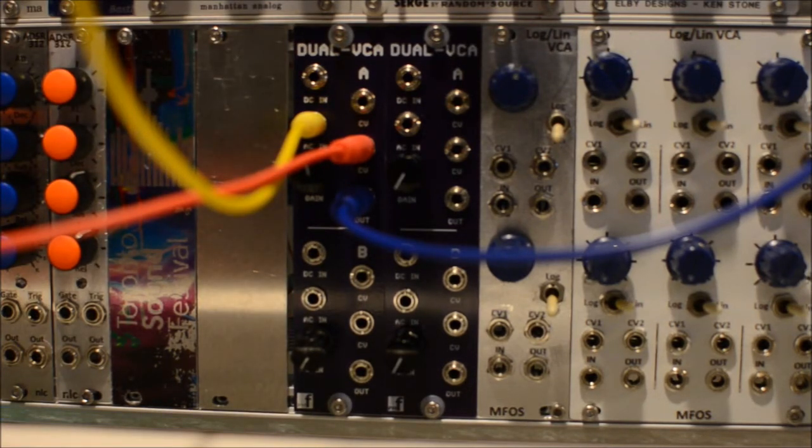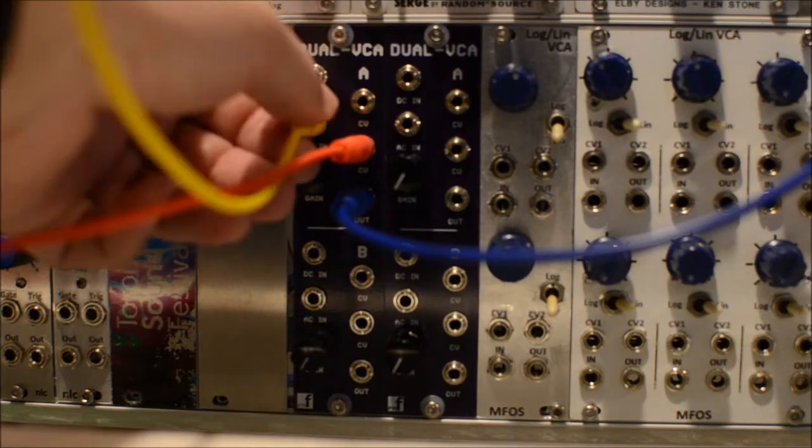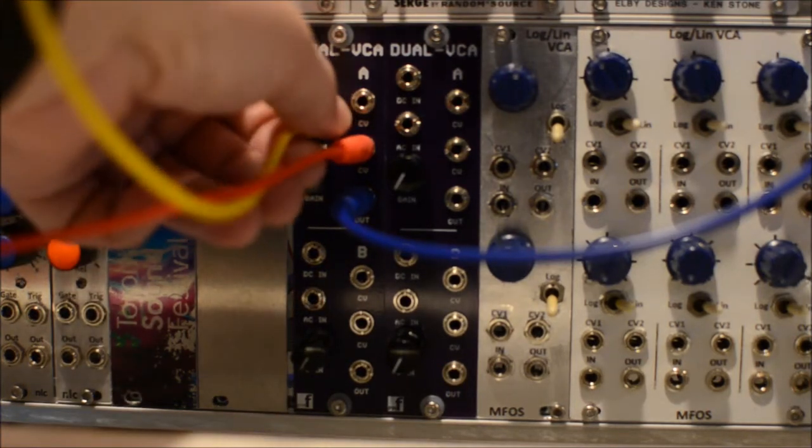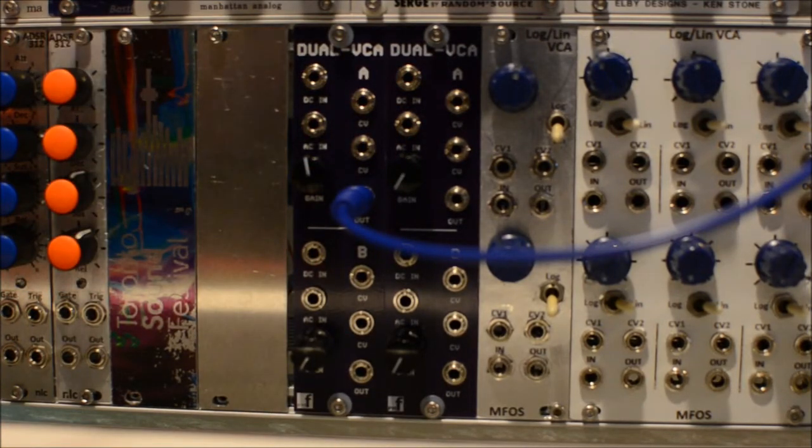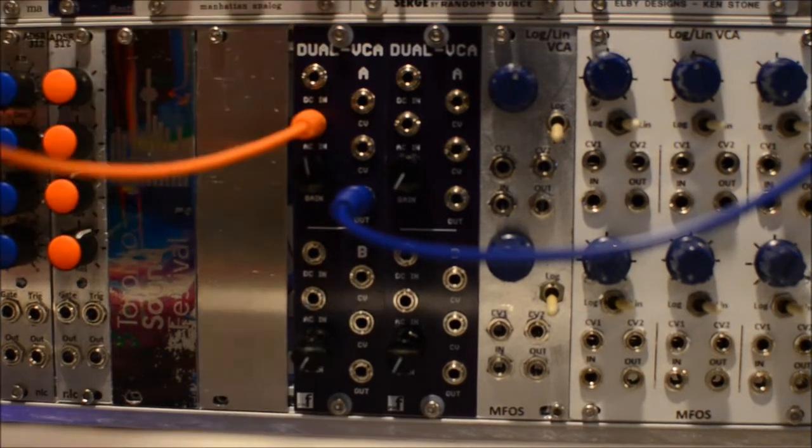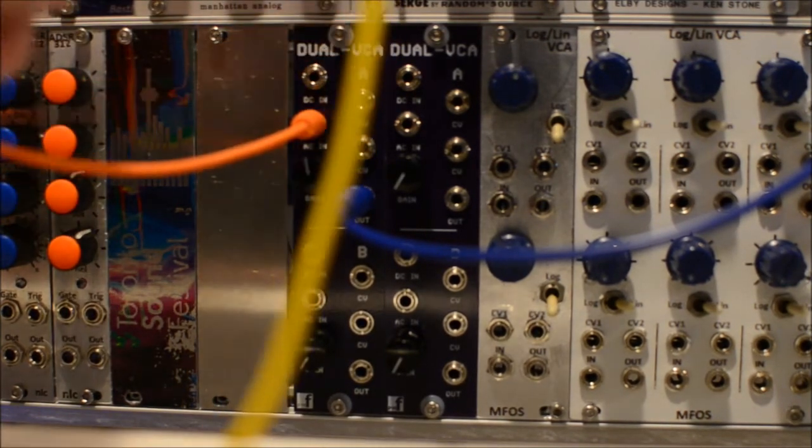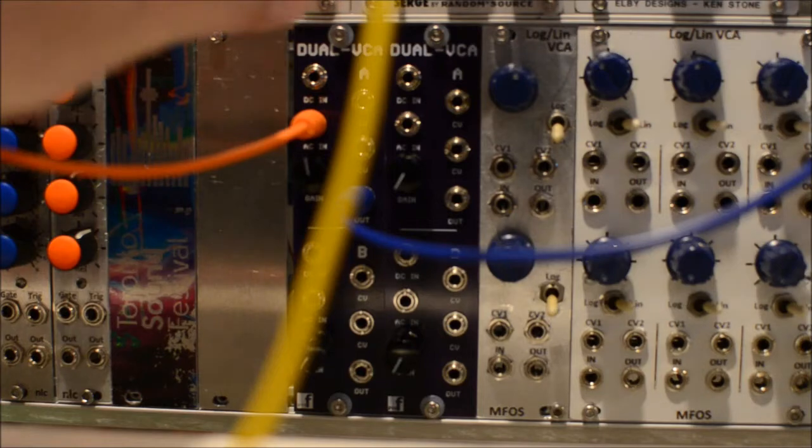So not sure what else you can demonstrate about a dual VCA. But the other thing I like to do sometimes with VCAs is to use them as ring modulators. So we have three sine waves coming from a living VCO. Let's plug those in, at least start with two.